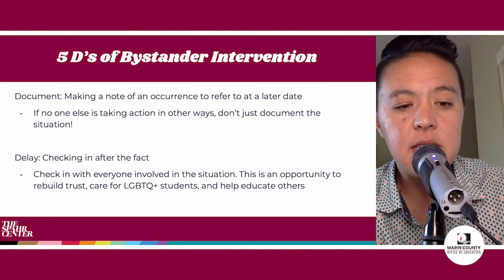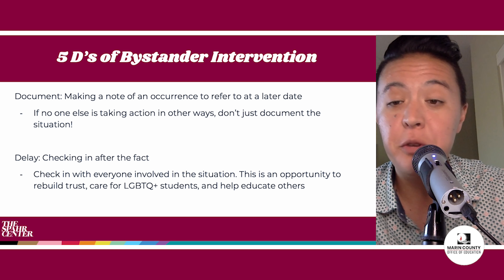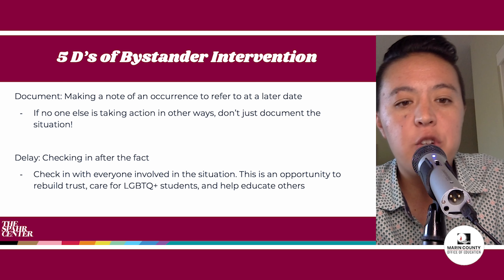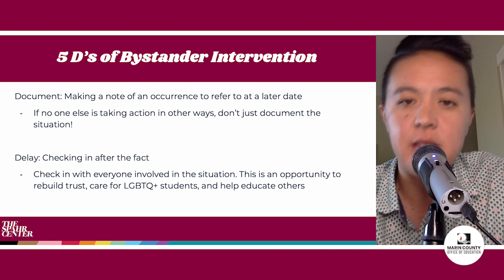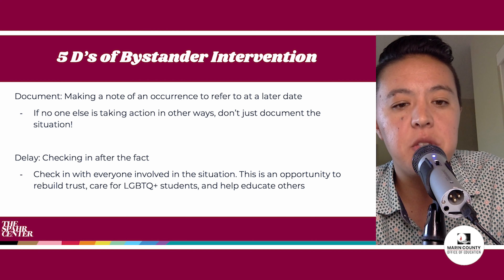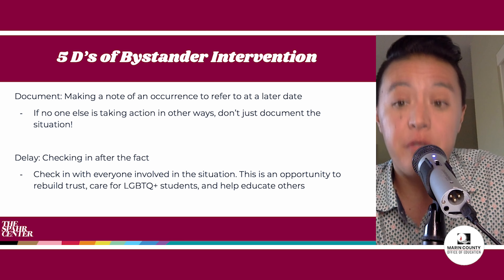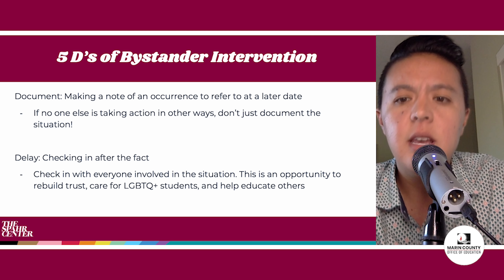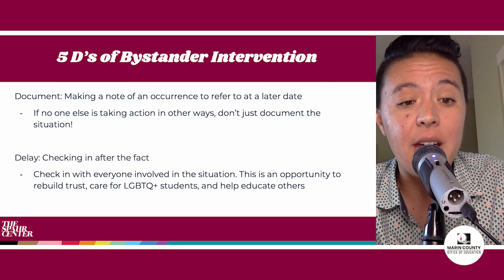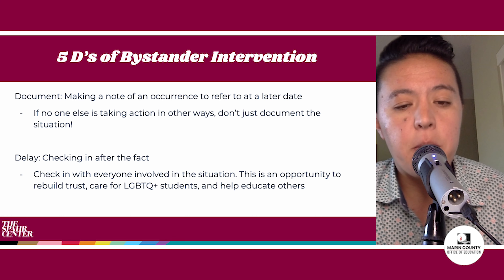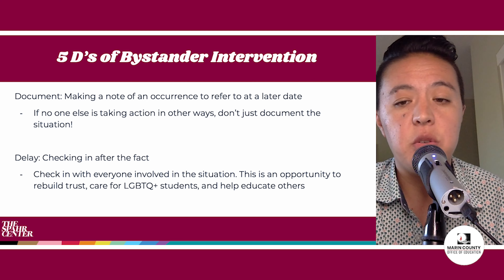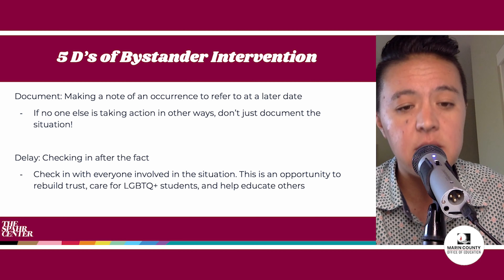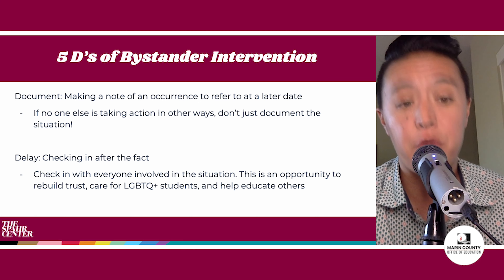The last D is Delay — we've already mentioned this a few times in other scenarios, but it's so important to check in with everyone involved in the situation after the incident. Check in with the student who was harmed privately and provide active allyship and support by listening to their needs. If needed, come up with action steps or a plan for how to repair the harm. This is an opportunity for us as active allies to rebuild trust, repair harm, care for our LGBTQ+ students, and continue the education process for everyone involved.